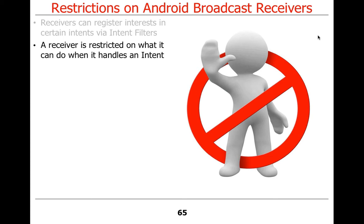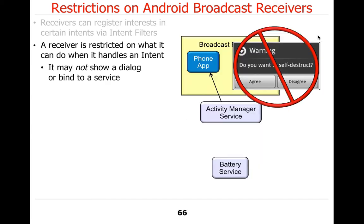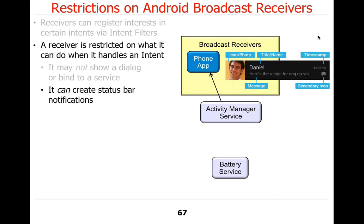Receivers have to be limited in what they can do because they're largely being run in the user interface thread. You can't show dialogues. Anything that involves interaction with the user cannot be done. You can't bind to a service inside of a broadcast receiver. However, you can create status bar notifications — things like email arrived, new SMS message, new Facebook posting — those are things you can put into the status bar.